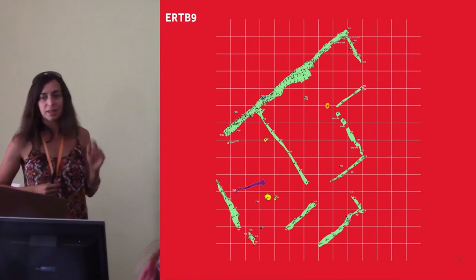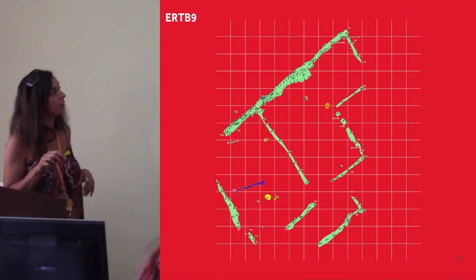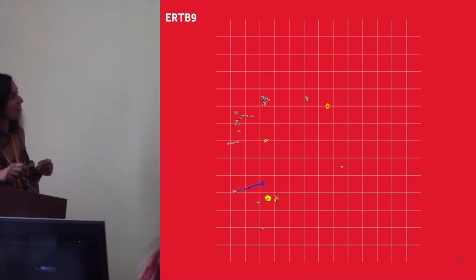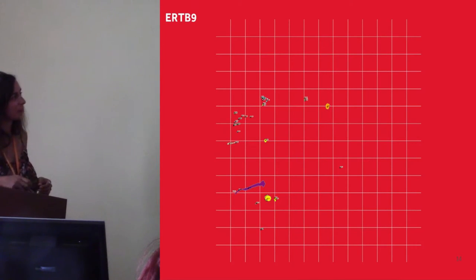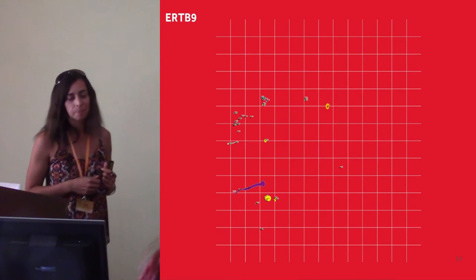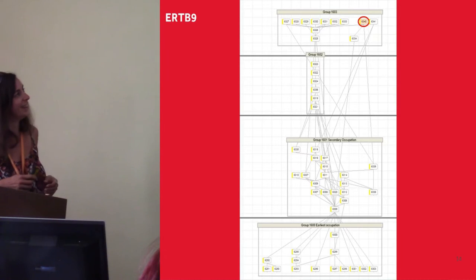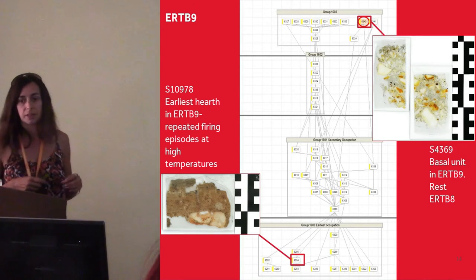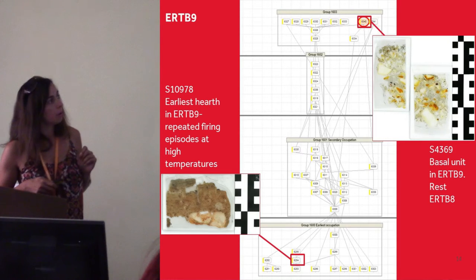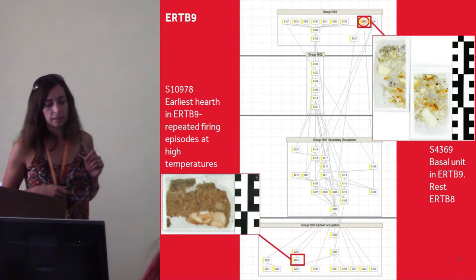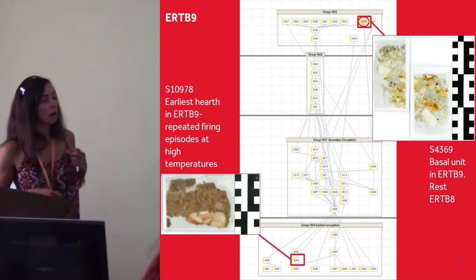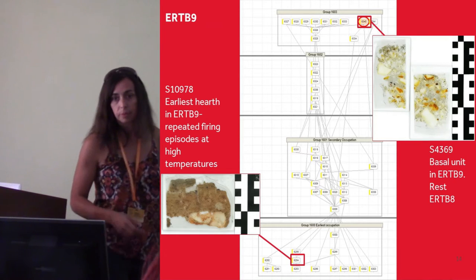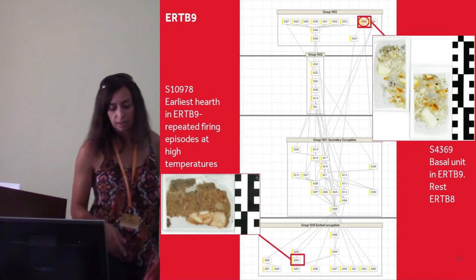To introduce Early Roman Timber Building 9 — this is the outline of Building 8, and what we have of Building 9 is just a few stake holes and post holes, really quite ephemeral in terms of what was there beforehand. However, we do have a matrix, and the samples I have also span into Building 9. What we do know is that we again have hearths with very high temperature burning, so it seems we have an industrial use of the building starting in its very early stages.